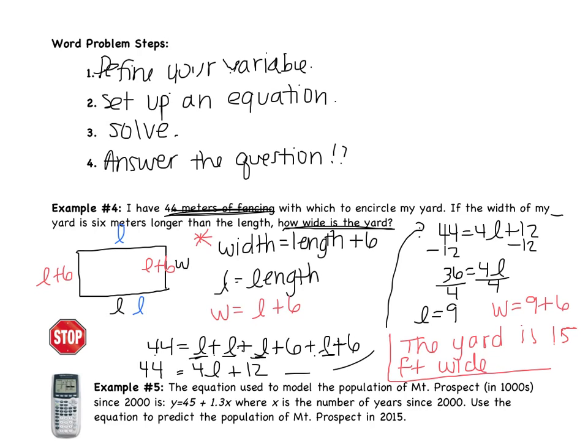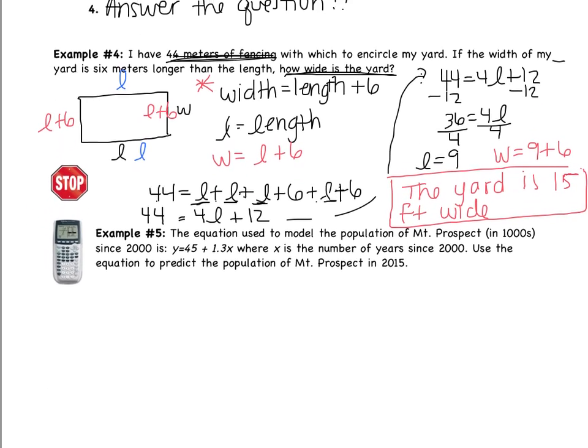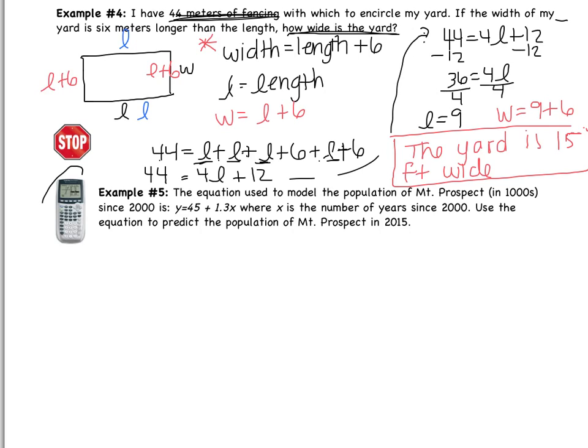You've definitely done a problem like this in geometry before — probably about ten of them. Last problem of this video: this one does involve a calculator, so get one out if you don't have one. The equation to model the population of Mount Prospect in thousands since 2000 is y equals 45 plus one-third x, where x is the number of years since 2000. Use the equation to predict the population in 2015. Please show your work — your teacher will go over it in class tomorrow. Good luck.